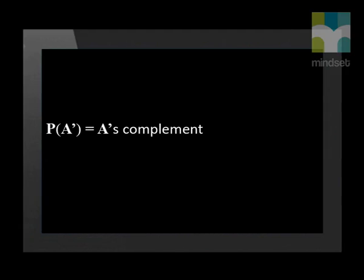Lastly, we need to revise the complement rule. The complement of event A is everything that is not event A. So the complement of rolling a six on a dice would be rolling anything other than a six. The complement of an event is indicated by A with an apostrophe, written as A dash, and A dash is the complement of event A.